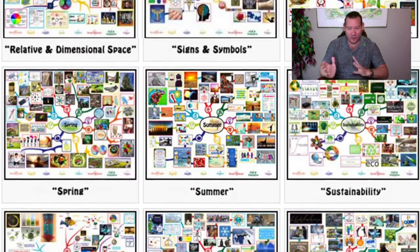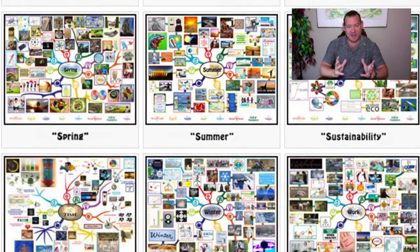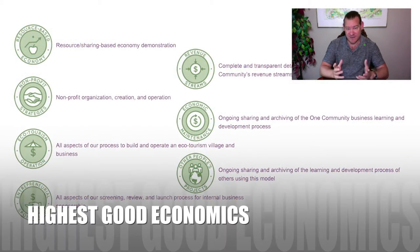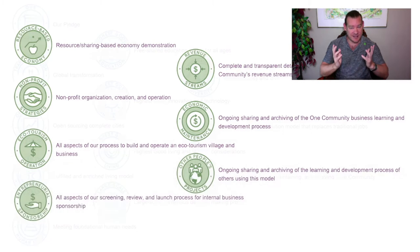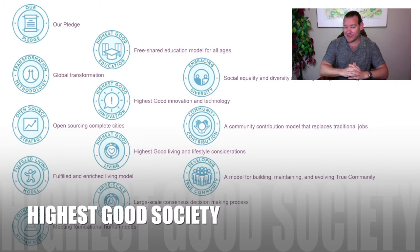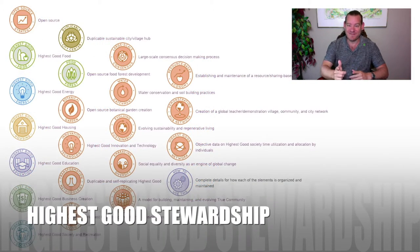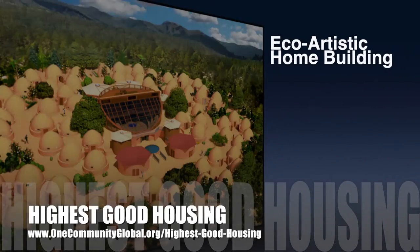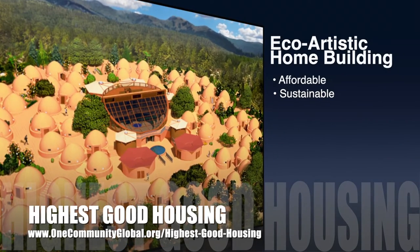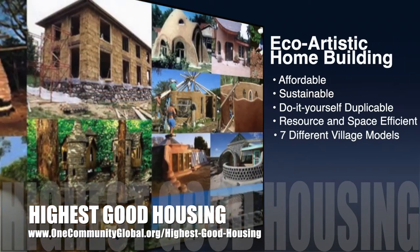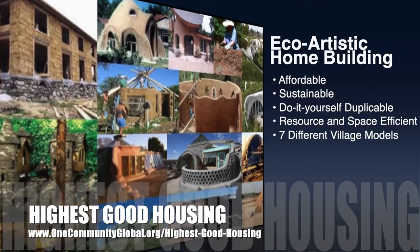Stick around for a couple more minutes to see bullet points on each of the different components we're developing. Check out our written blog to see the specifics of everything our all-volunteer team has completed within the last week. The One Community approach to highest good housing is eco-artistic home building that is affordable, sustainable, do-it-yourself duplicable, resource and space efficient, and consists of seven different sustainably constructed village models.